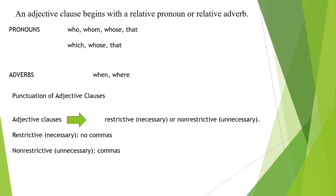Punctuation of adjective clauses: they are either restrictive (necessary) or non-restrictive (unnecessary). A restrictive clause is necessary because it identifies its antecedent — do not use commas with restrictive clauses. A non-restrictive clause is not necessary to identify its antecedent; it gives extra information and should be separated with commas. The relative pronoun 'that' is used in restrictive clauses only; 'which' is used in non-restrictive clauses only. Other relative pronouns and adverbs can be used in both.